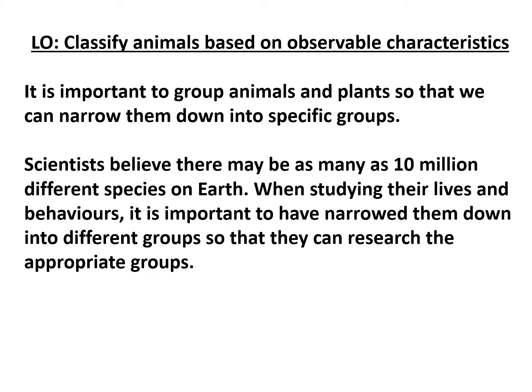Good afternoon Year 6. We're going to do another science lesson and today we're looking at classifying animals — that means sorting them into groups based on observable characteristics, so things that we can see. It's really important that we can group animals and plants so we can narrow them down into specific groups. Scientists believe there may be as many as 10 million different species on Earth, so it's important we can subsection them into groups to research them appropriately.